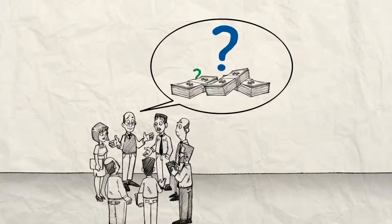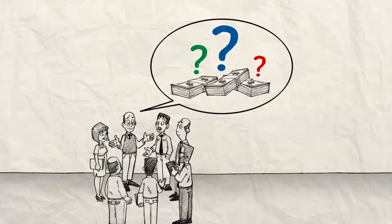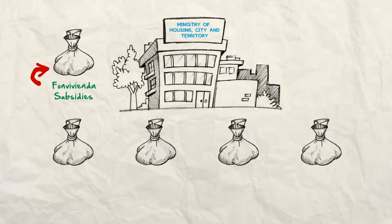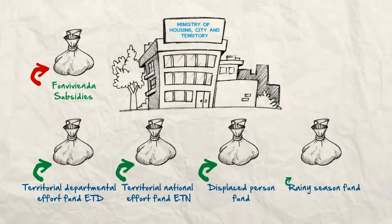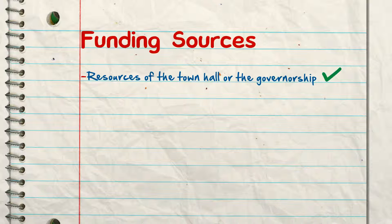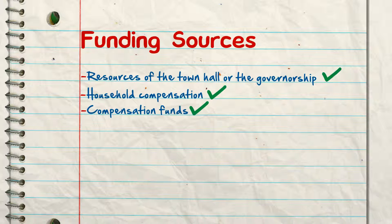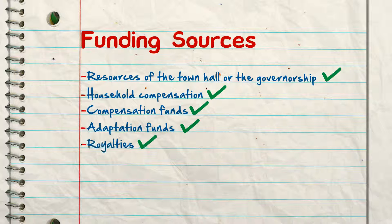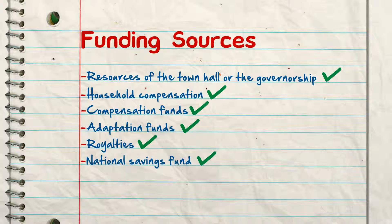You have to see who can provide resources. You can check, for example, the funds — which are the resources from the Ministry of Housing, City, and Territory — or the mayor or governor subsidies. The household's contributions to the family compensation funds, and even in some cases the special resources from the National Adaptation Fund, the National Royalty System, or the National Savings Fund.